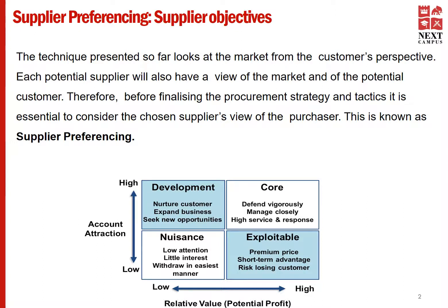Looking at the top right-hand corner box, this is called the core customers. Here, the customer's account is very attractive and the potential profit is also very high. Suppliers would love to work with these customers.